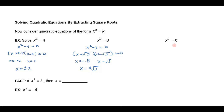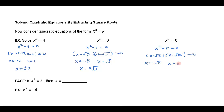I can do that same thing with any number. I bring k over: x squared minus k equals 0, then factor that as x plus the square root of k times x minus the square root of k. Setting each factor equal to 0, I get x equals negative square root of k or x equals positive square root of k, which I can abbreviate as x equals plus or minus the square root of k.